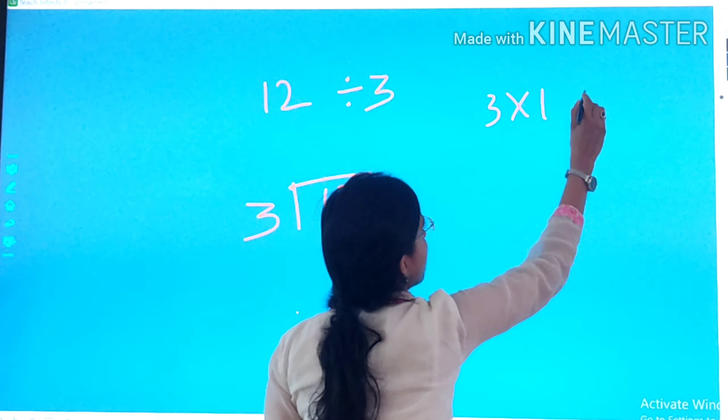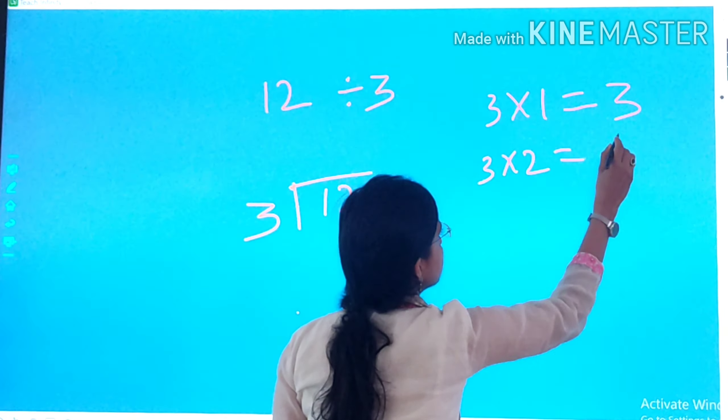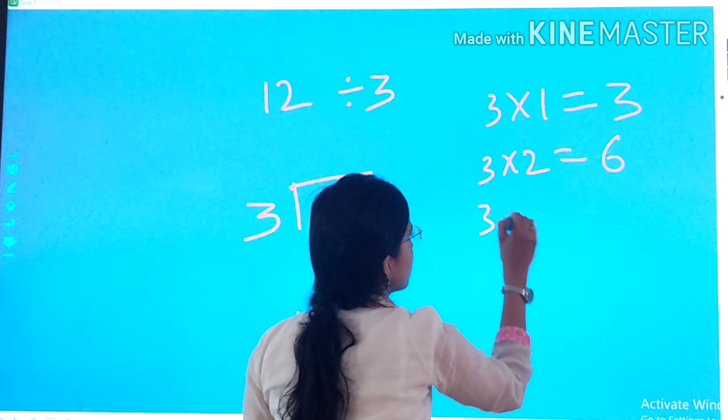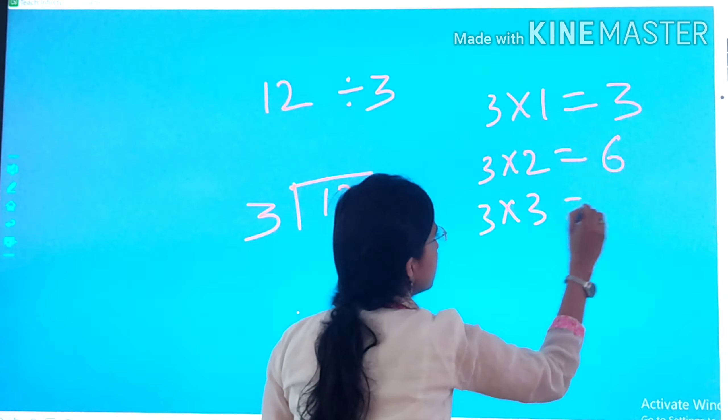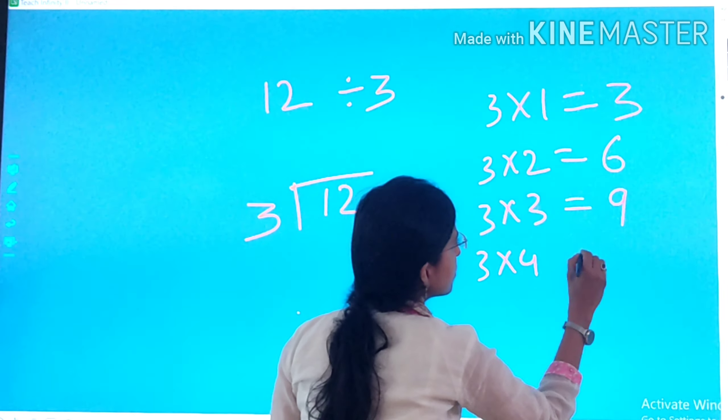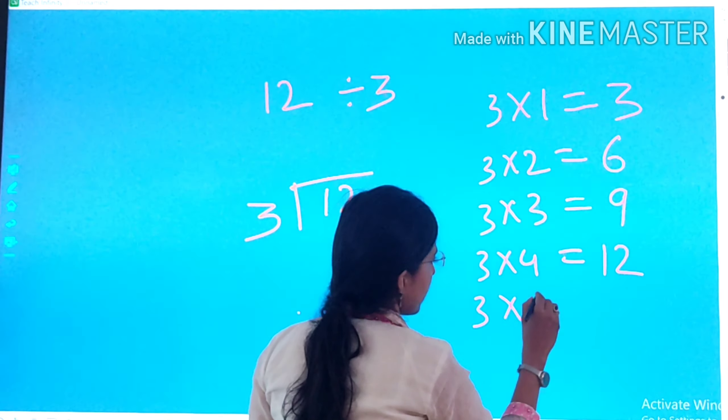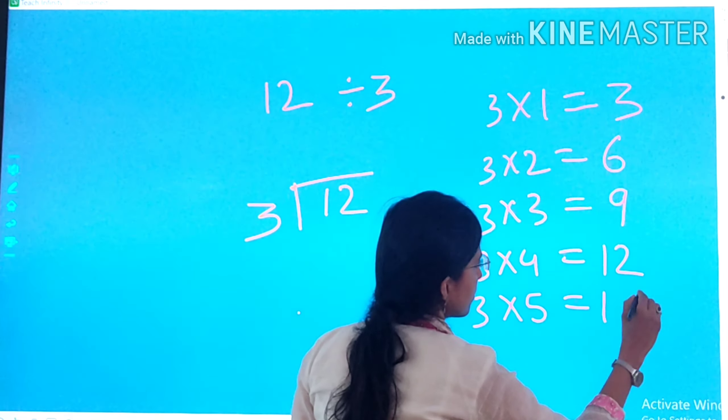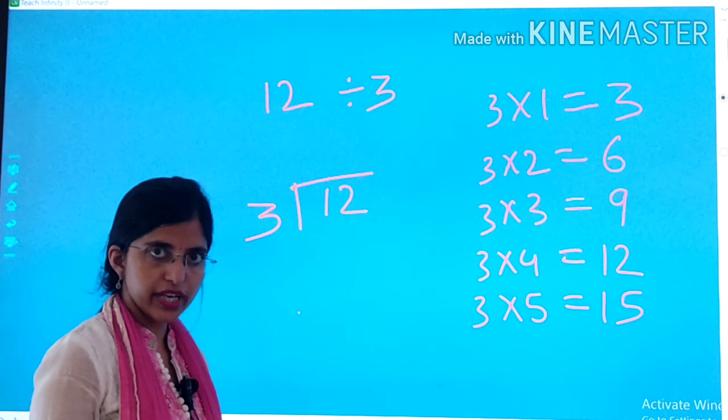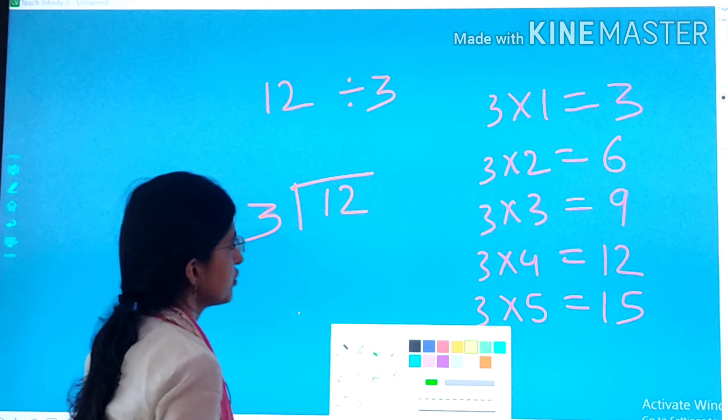3 ones are 3. 3 twos are 6. 3 threes are 9. 3 fours are 12. 3 fives are 15. This is how we do division.